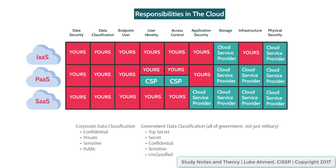Infrastructure: if you're renting an infrastructure as a service, the infrastructure is obviously going to be your responsibility. But in platform or software as a service, you're not paying for the infrastructure portion — you're just paying for the platform or software renting part. So in IaaS, the responsibility is yours; everything else is the cloud service provider's.